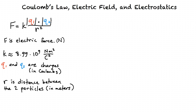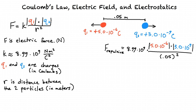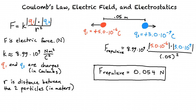For example, let's say we have two particles 0.05 meters apart. One particle has charge positive 5.0 times 10 to the negative 6th Coulombs, and the other has charge positive 3.0 times 10 to the negative 9th Coulombs. Substituting into Coulomb's Law: F repulsive equals 8.99×10⁹ times 5.0×10⁻⁶ times 3.0×10⁻⁹, all divided by 0.05 squared. After performing this calculation, we find a repulsive force of 0.054 N.